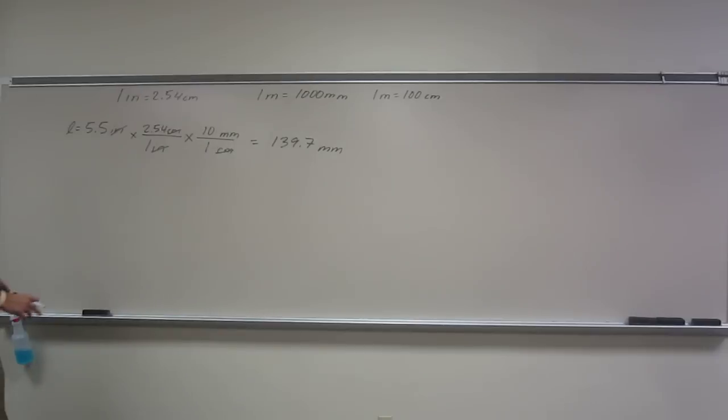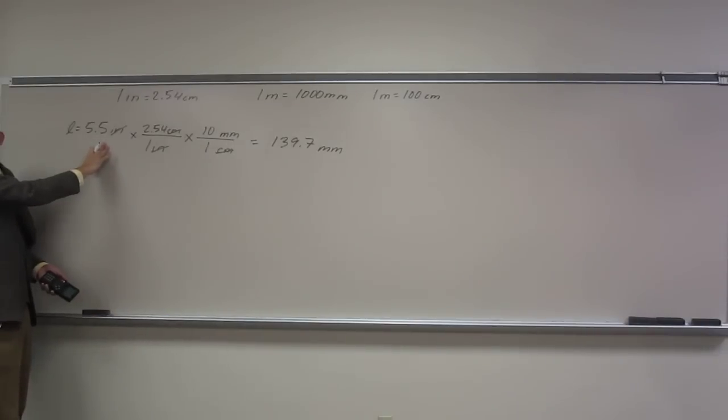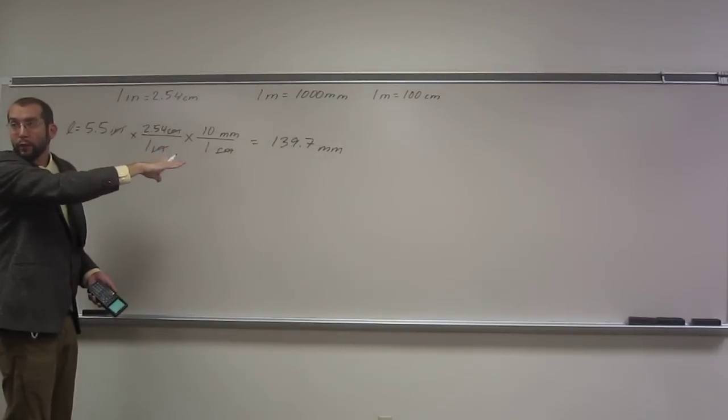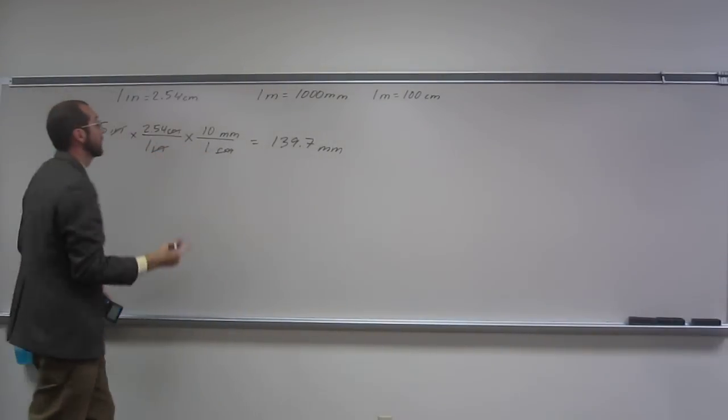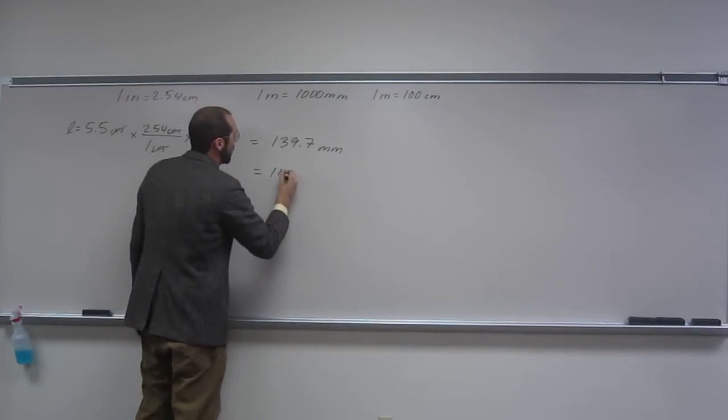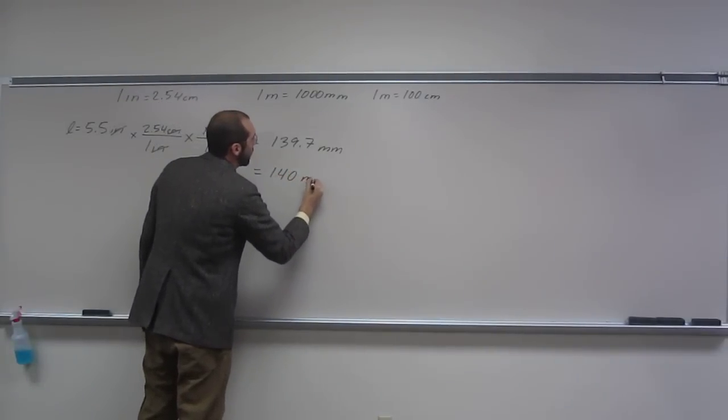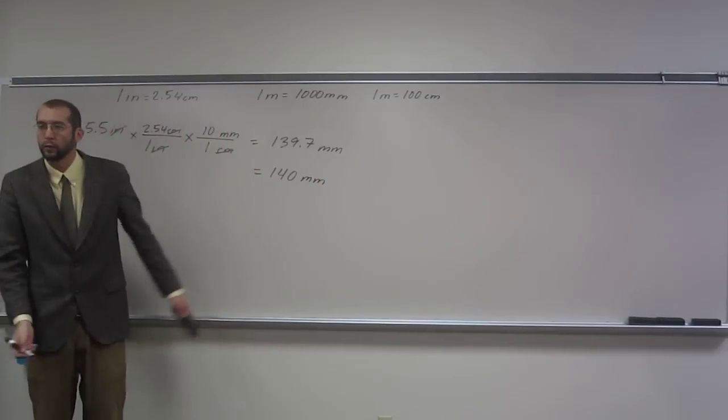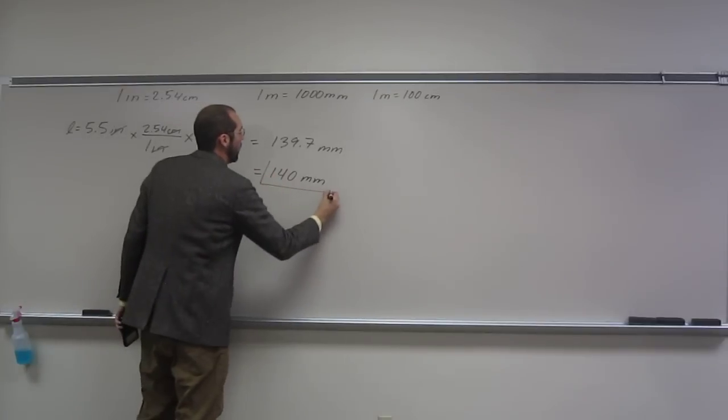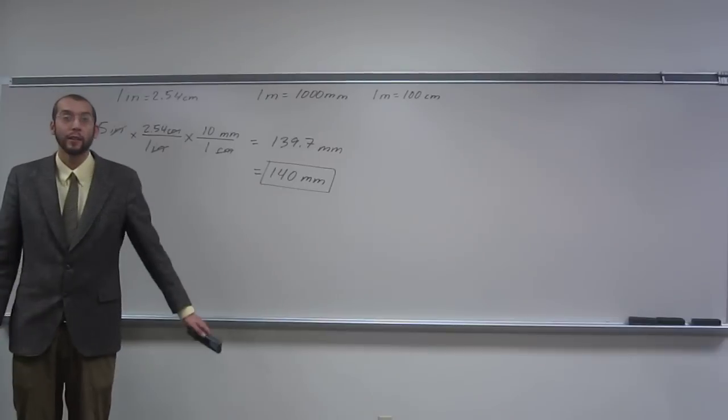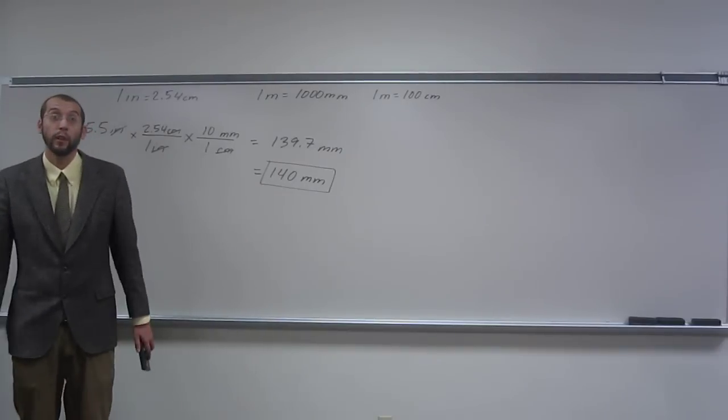So anyways, this has two significant figures. That thing has more than two significant figures, so we're going to have to do something to it. So we're going to round. So it's going to be, we can do it a number of ways. Let's just do it this way. 140 millimeters. That's two significant figures.